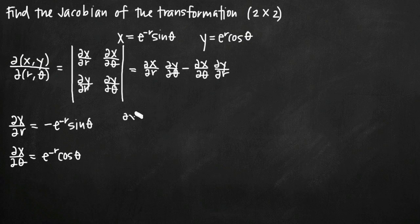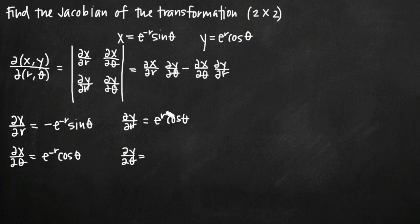For the partial derivatives of y: taking the derivative with respect to r, we treat r as the variable and theta as a constant. Cosine theta is a constant coefficient on e to the r, and the derivative of e to the r is simply e to the r, so we get e to the r cosine theta. Taking the partial derivative of y with respect to theta, the derivative of cosine is negative sine, giving us negative e to the r sine theta.